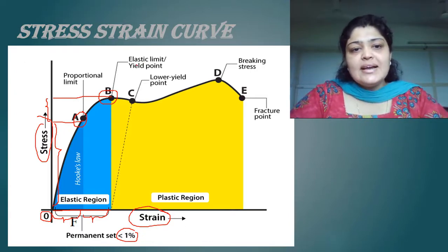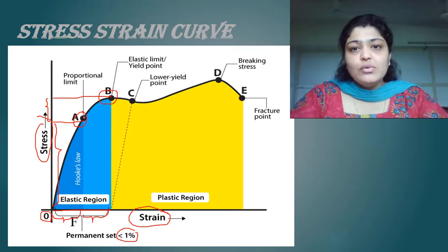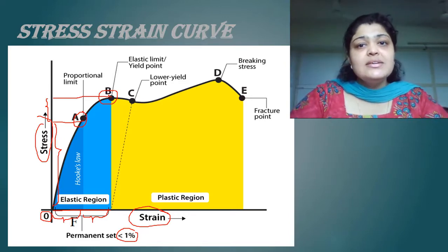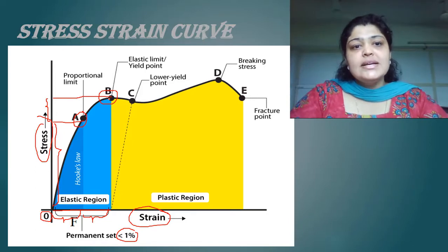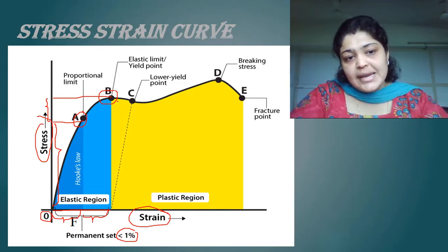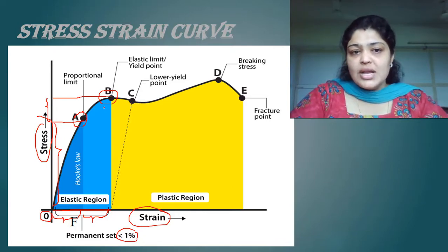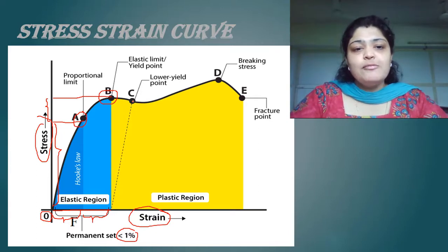Point B is known as the elastic limit or the yield point — it is the starting point of plastic deformation. Till point A, the material was perfectly elastic: remove the stress and strain is also removed. Till point B, the body recovers but not to the original shape; there will be a permanent set less than 1%. Point B to C represents the upper yield point to lower yield point, where you are not increasing the stress much but plastic deformation is beginning.